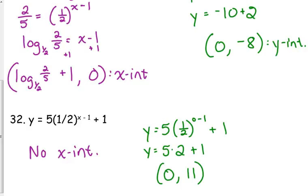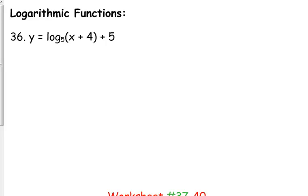And instead of breaking this up, I want to go ahead and talk about the logarithms while we're at it. We'll do the exponential and logarithms together and find the intercepts. So let's use number 36 as an example. Y is equal to the log base 5 of x plus 4 plus 5. Now again, remember,